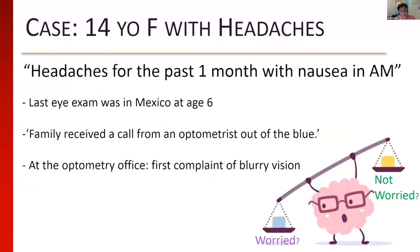Starting with a case: this is a 14-year-old girl — actually her mother brought her in — whose last vision exam was in Mexico at age six. They got a random phone call from an optometrist out of the blue saying she needed an appointment. Mom still does not know why she got that phone call. At the optometry office, they asked if she had blurry vision and headaches, and she said yes to both. She also gave a history of nausea for the last month, which hadn't been reported to a pediatrician or any care provider. The optometrist noted an abnormal optic nerve appearance and sent her to me.